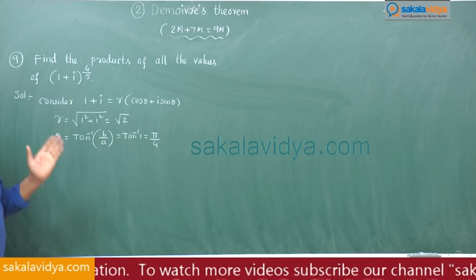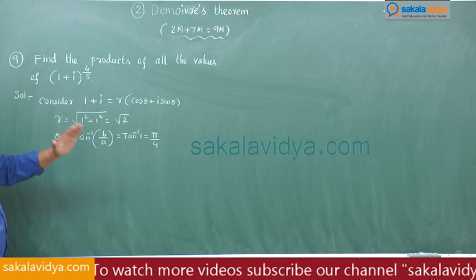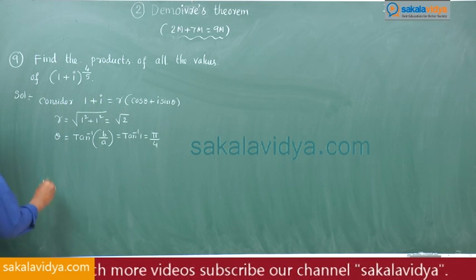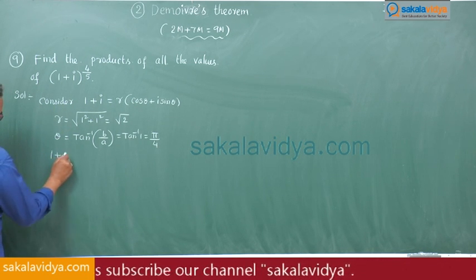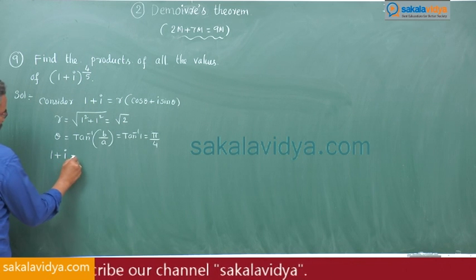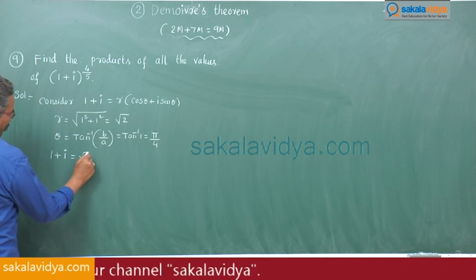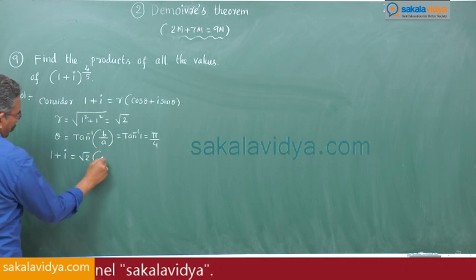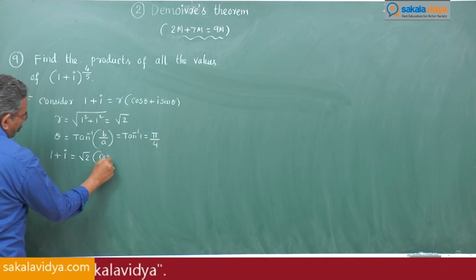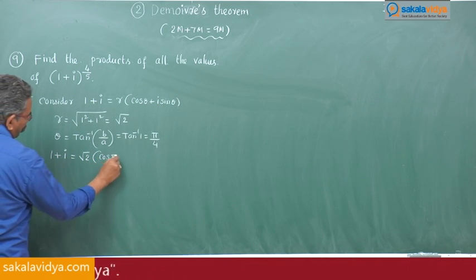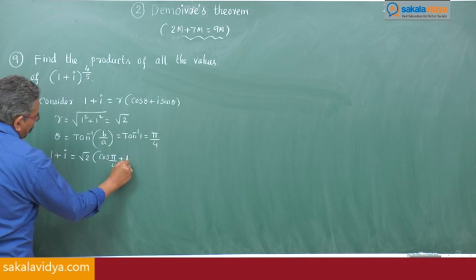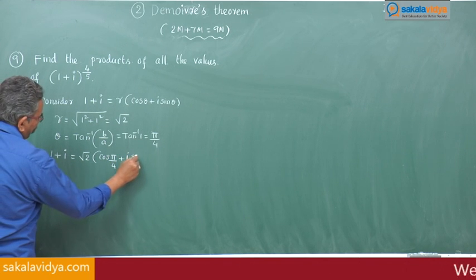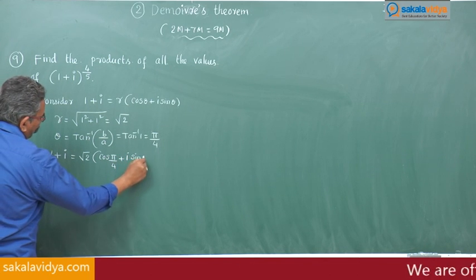Transform 1 plus i into the polar form. So, 1 plus i is equal to root 2 times (cos π/4 plus i sin π/4).